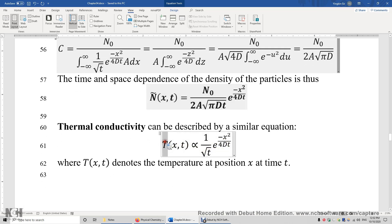This is temperature. The temperature at position x at time t is proportional to 1 over the square root of t times e to the power of negative x squared over 4Dt. So this part is exactly the same as this part, and also you have square root of t on the bottom.